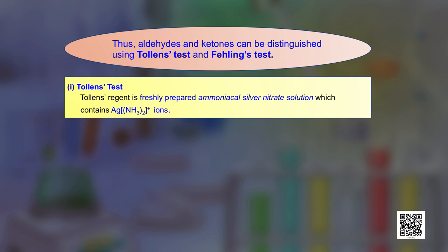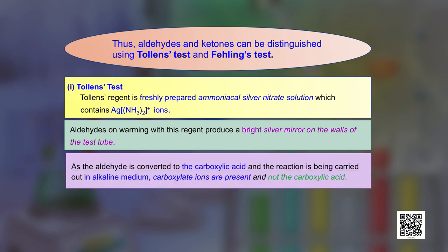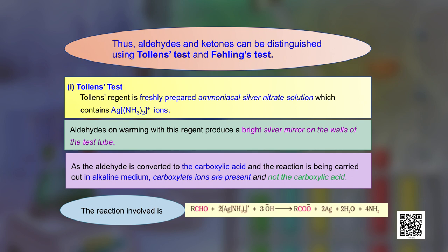Tollens' reagent is a freshly prepared ammoniacal silver nitrate solution containing [Ag(NH₃)₂]⁺ ions. Aldehydes on warming with this reagent produce a bright silver mirror on the walls of the test tube. The aldehydes are oxidized to carboxylic acids, and since the reaction is in alkaline medium, the carboxylate ion is formed as the product.